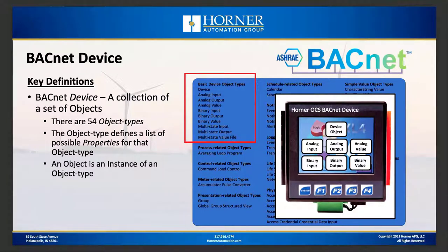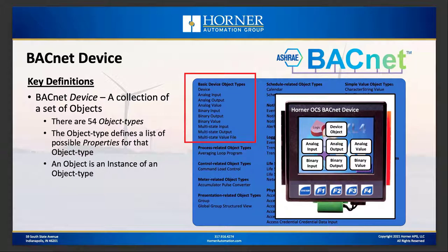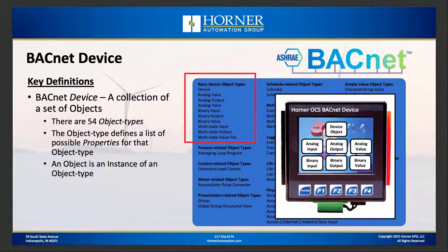There are 54 different object types available, but by far the most common are the basic device object types shown in the red box. The OCS is made up of seven different types of objects: the device object — which every BACnet device must support and reports things like device type and manufacturer ID — plus analog input, analog output, analog value, binary input, binary output, and binary value. You can have multiple instances of each of those six types.